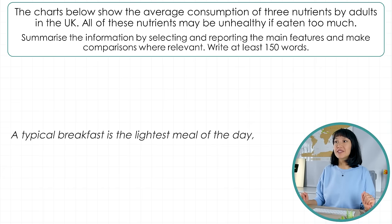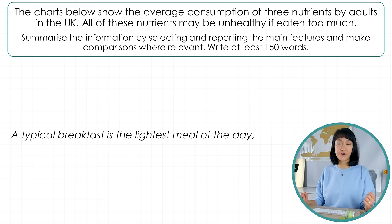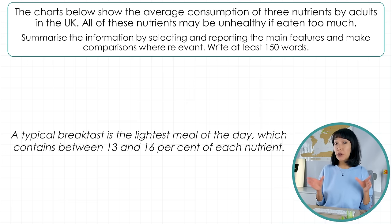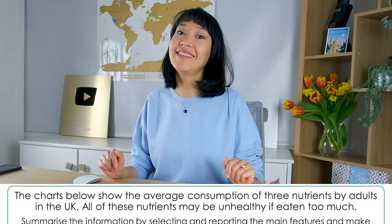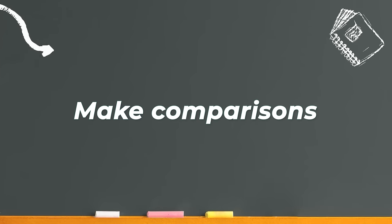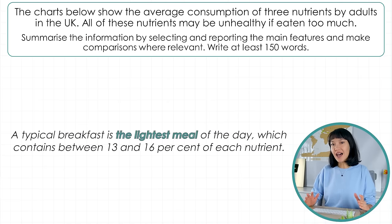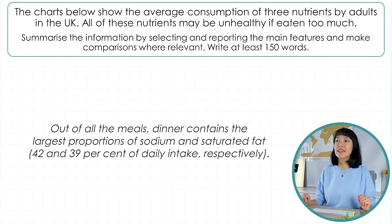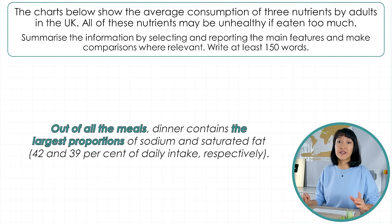For example: 'A typical breakfast is the lightest meal of the day' — I'm explaining what I found. Then I give figures to prove it: 'which contains between 13 and 16% of each nutrient.' It's not important which is 13 and which is 16 because the numbers are so close. Another important point is to make comparisons. By saying breakfast is the lightest meal, we compare it to other meals. Here's another example: 'Out of all the meals, dinner contains the largest proportions of sodium and saturated fat — 42 and 39% of daily intake, respectively.' These phrases show a very clear comparison.